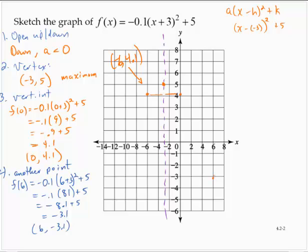And then symmetry, 6 is 9 units away. So go 9 units on the other side. That would be (-12, -3.1).